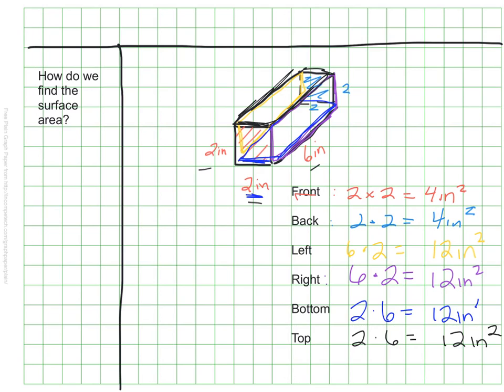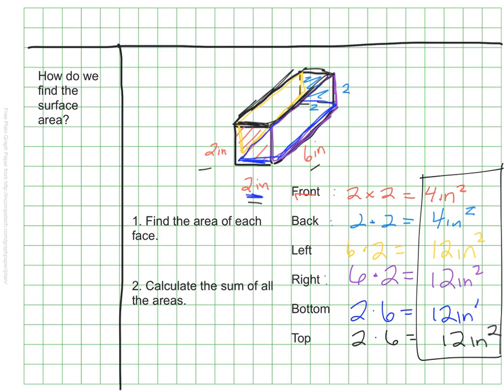Once I know all of the areas of all of the faces, I need to find the sum of all of that information. So the first thing I did was find the area of each face, which leads me to now find the sum of all of the areas. If I look over here, I need to add all of these values up to figure out my total surface area. The area it would take to cover this 3D shape would be 56 square inches.